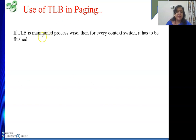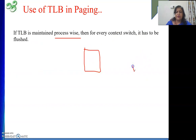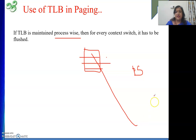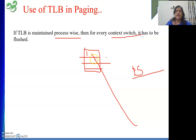If TLB is maintained process-wise, then for every context switch we must flush it. For example, if process one is executing and a context switch happens to process five, the TLB entries from process one must be cleared — otherwise process five might get wrong frame numbers for the same page numbers. So once a context switch takes place, the TLB is flushed and repopulated for the new process.